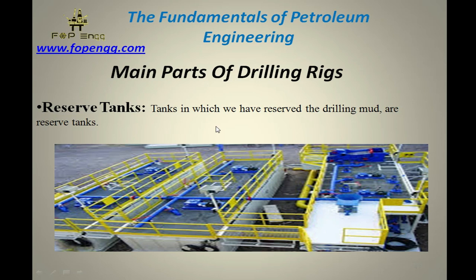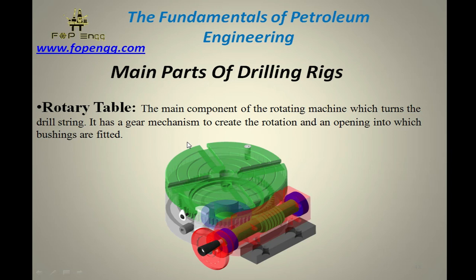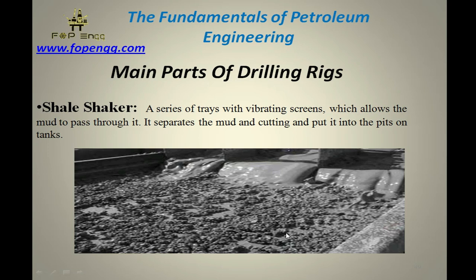Reserve tanks — these tanks are used for storing drilling mud for the circulation process. Rotary table — the rotary table is the main component which rotates the drill string. It has a gear mechanism to create rotation and an opening into which bushings are fitted.